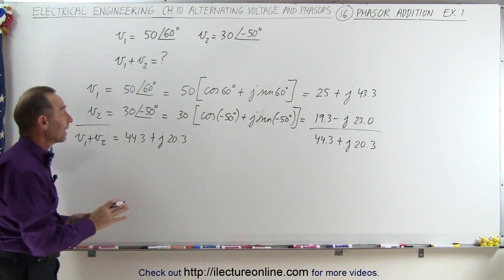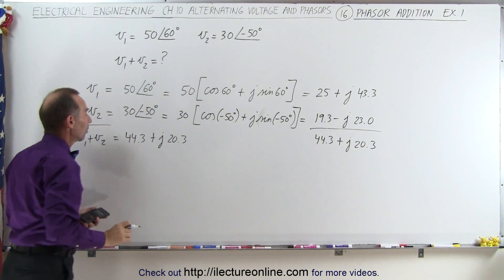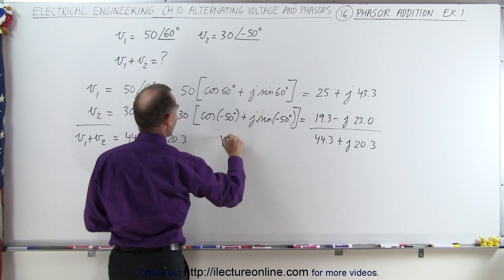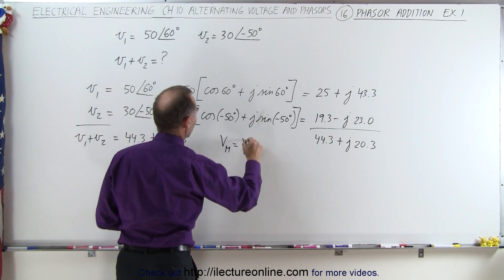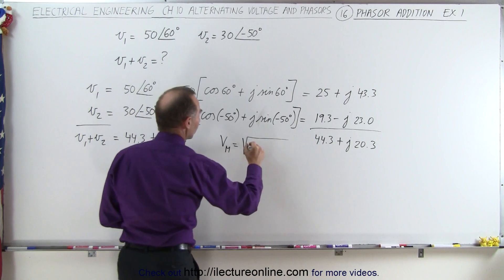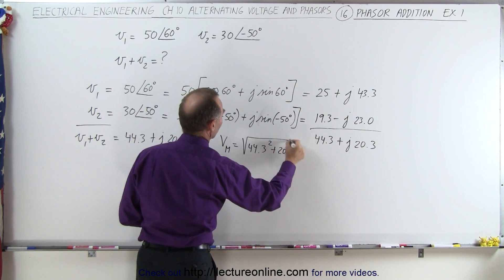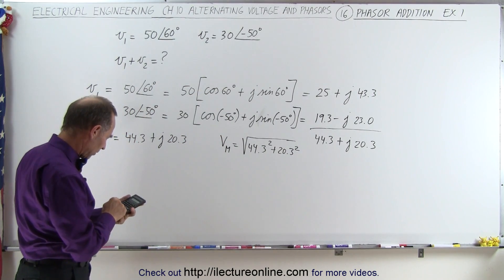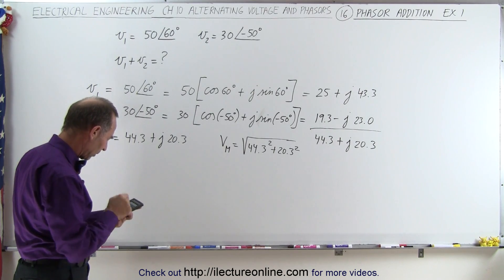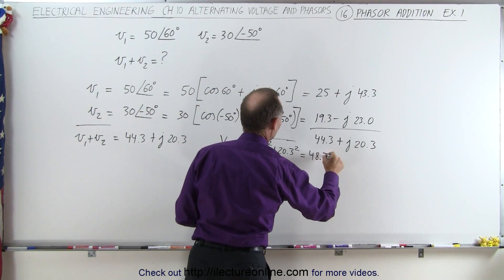Now of course you probably don't want to leave it like that, you probably want to go back to the regular format with magnitude and phase angle. So the magnitude Vmax is going to be equal to the square root of the sum of the squares, so it would be 44.3 squared plus 20.3 squared. Take the square root and we get 48.7.